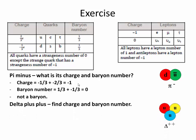Let's look at another one — the delta plus plus. Find the charge and the baryon number. It has up, up, up quarks. The charge will be two-thirds plus two-thirds plus two-thirds, which equals two. The baryon number will be one-third plus one-third plus one-third, which equals one. So this is a baryon.